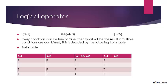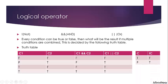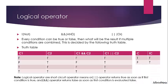Here the truth table of conditions with AND and OR operators is given. The AND operator returns true if all conditions are true in the expression. The OR operator returns true if at least one condition is true. Note that AND and OR operators are called short-circuit operators because AND returns false as soon as it finds one false condition, and OR returns true as soon as it finds one true condition.